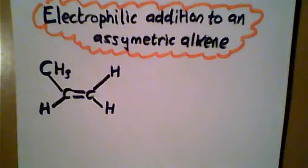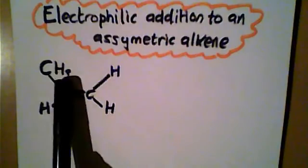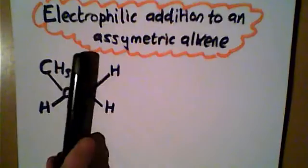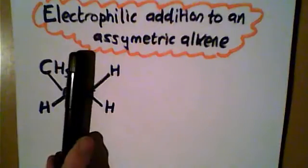In this mechanism we're going to look at what happens when our alkene is asymmetric. If we try and draw a line of symmetry there, you can see that it is an asymmetric, not symmetric molecule.